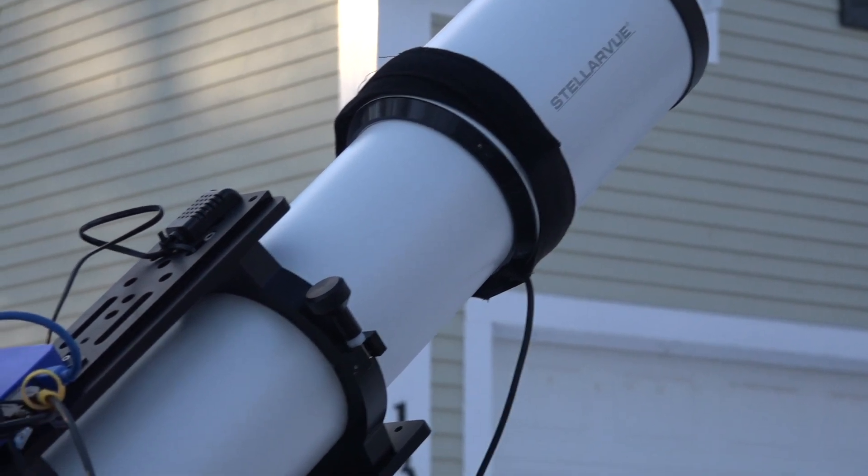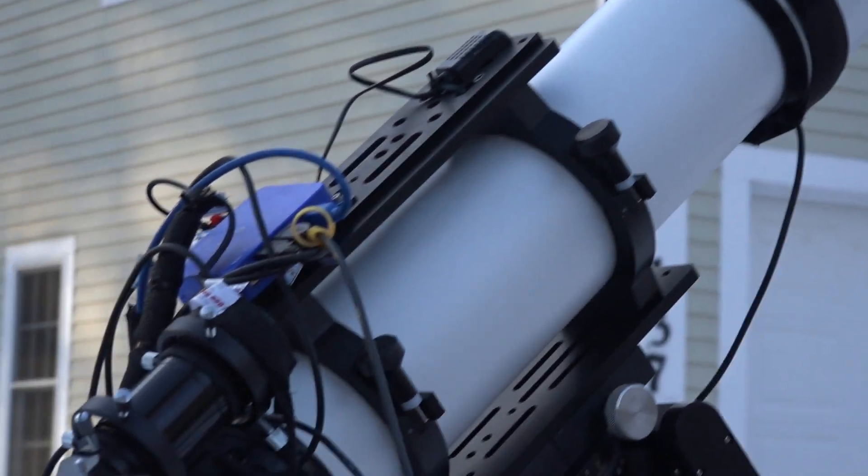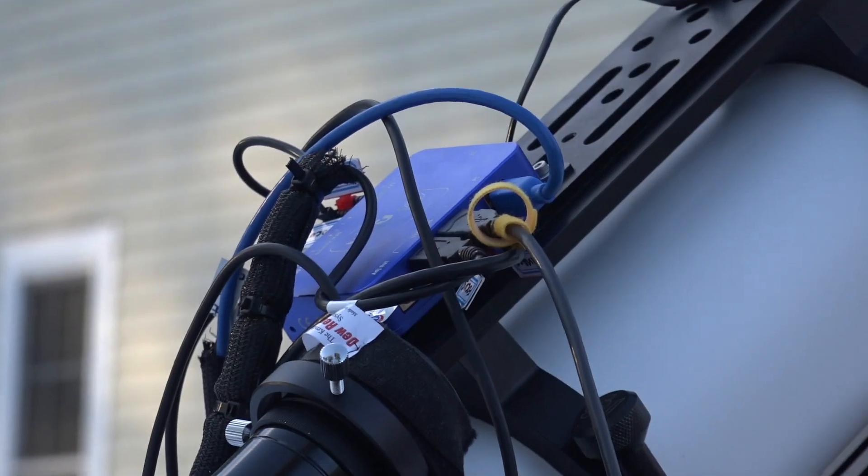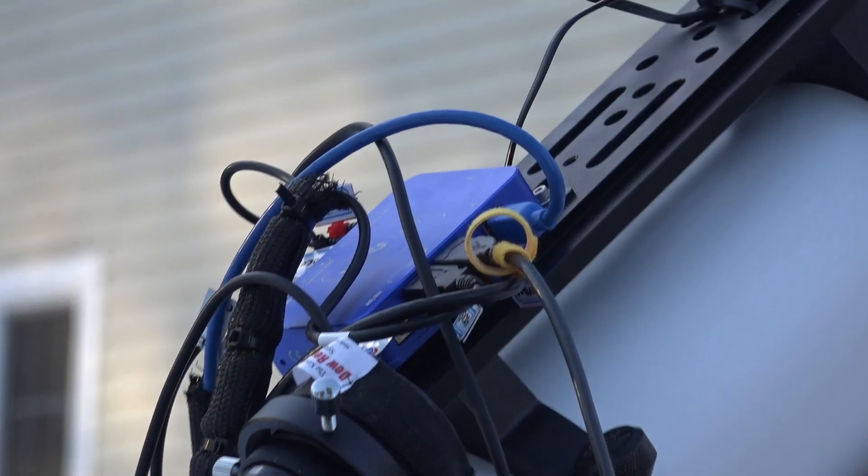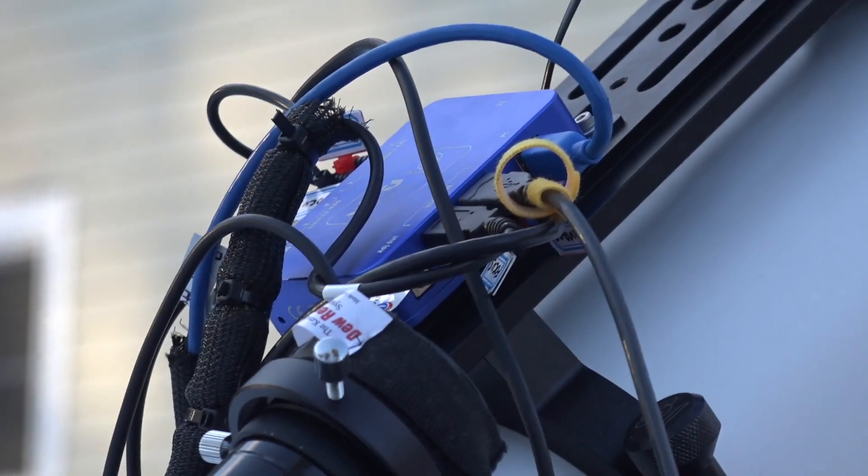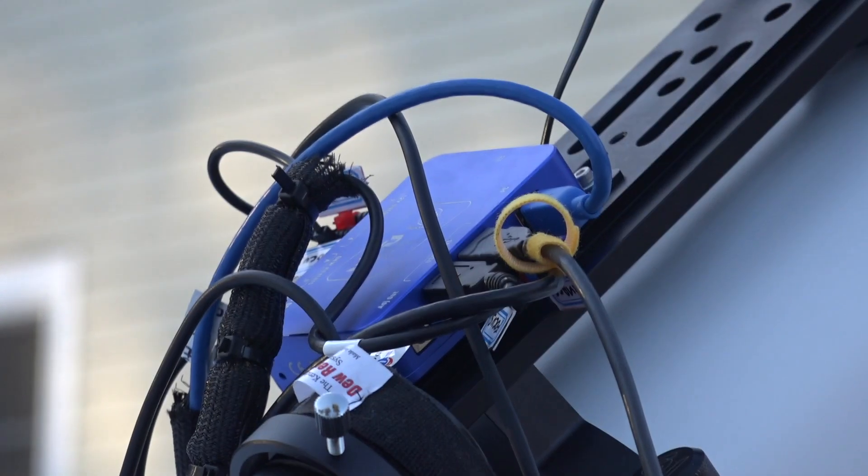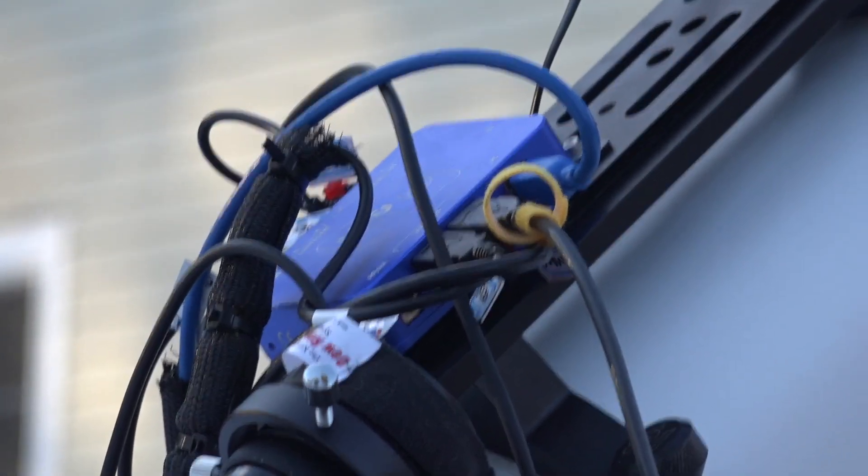If we go back down the tube, you can see this blue box. It's a Pegasus power box which I had installed, and it provides a powered USB connection for all my computer connections to the cameras as well as a 12-volt power hub to power my main camera and the dew heaters.